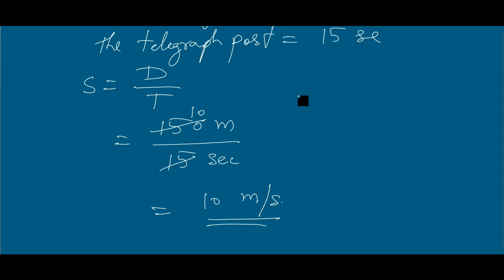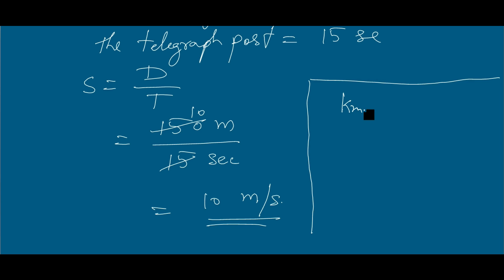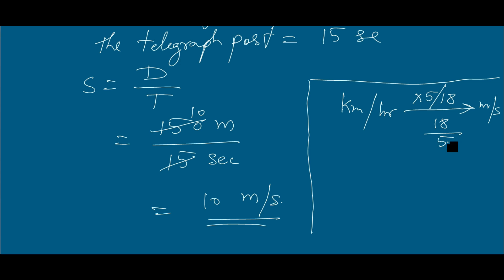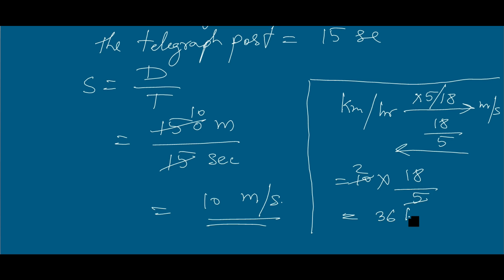We need the speed in kilometers per hour. To convert from kilometers per hour to meters per second, we multiply by 5/18. So to convert the reverse — meters per second to kilometers per hour — we multiply by 18/5. Therefore, 10 multiplied by 18/5 equals 36 kilometers per hour. This is the speed of the train.